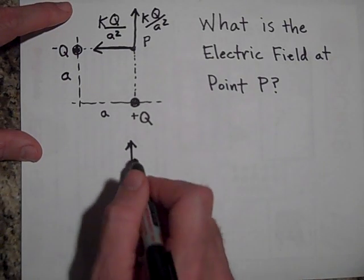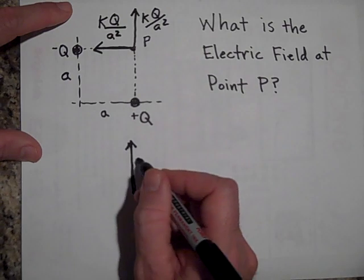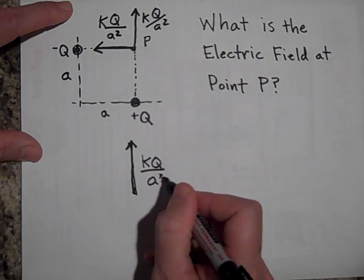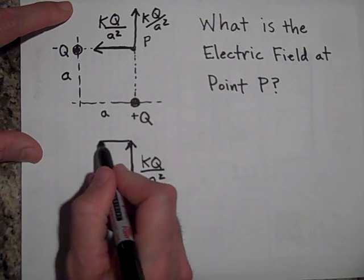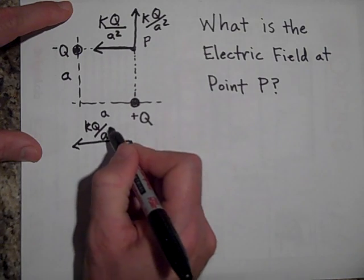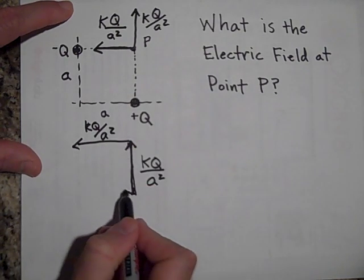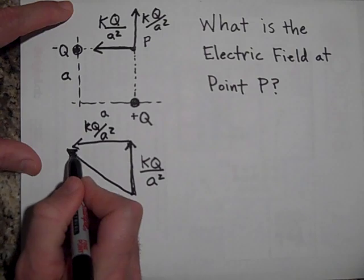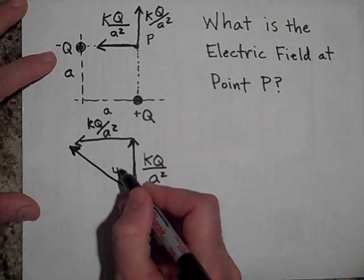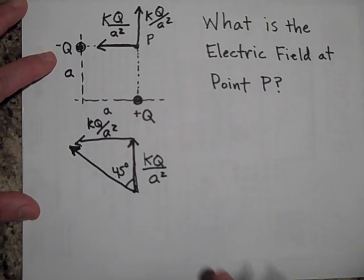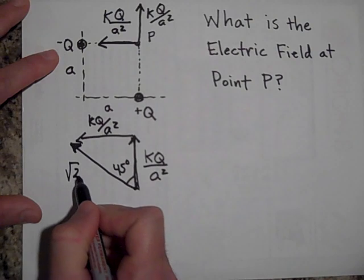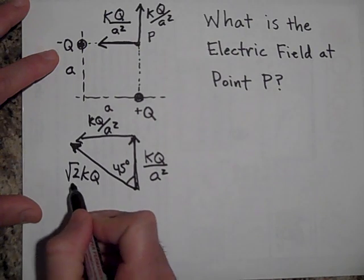Here, let me show you the vector. This is showing you the direction and this is the magnitude of it. Here's the other vector. And it's KQ over A squared. So this is the total vector then. Its direction is 45 degrees because these are an isosceles triangle. And its magnitude is the square root of 2 times KQ over A squared.